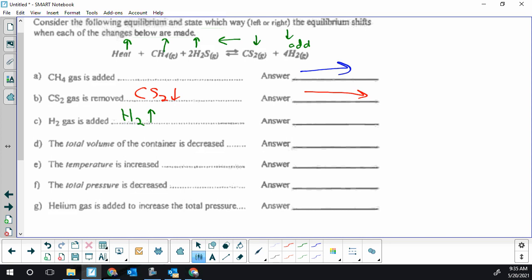Moving on to d, the total volume is decreased. We always have to think in terms of pressure when there's PV changes. Our volume went down, so a smaller container will cause a pressure increase.